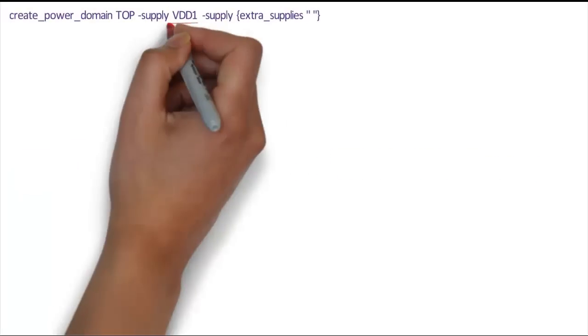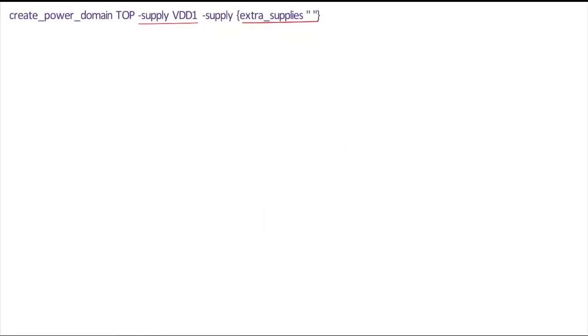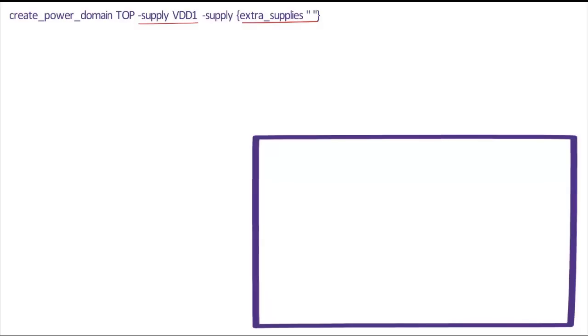First, we create Power Domain Top with SupplyVDD1 and Extra Supply's Empty list. This will ensure no other supplies are available in Top. This will create a Power Domain Top with Top.Primary and Top.VDD1.